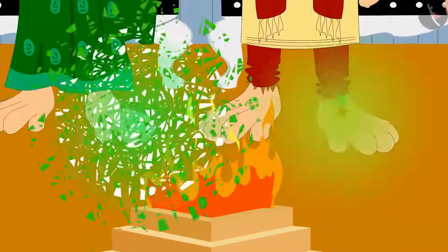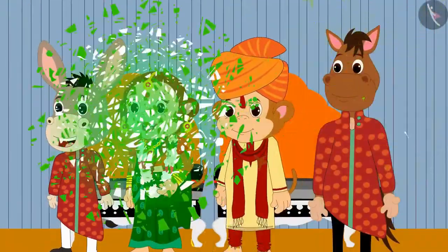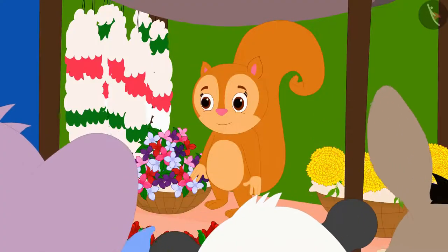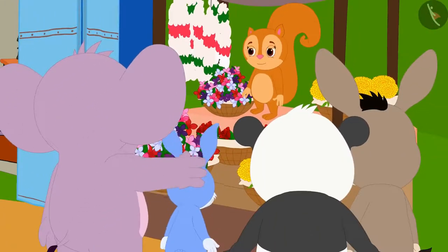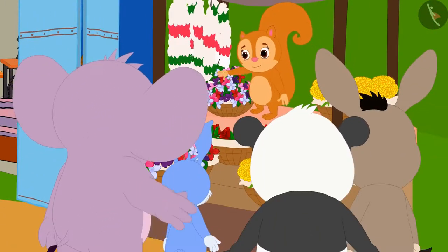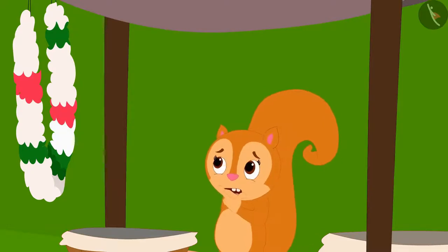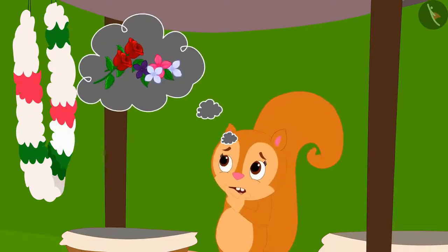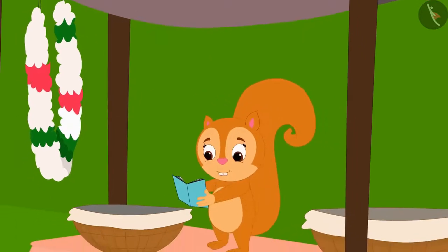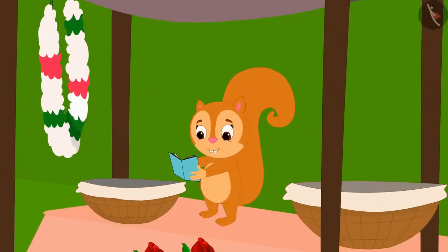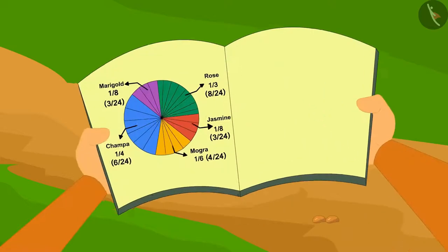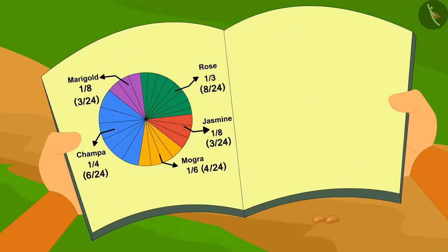With the wedding season in Champapur, Chanda is getting a lot of orders to decorate the wedding pavilion with flowers. Chanda is wondering which of her flowers people like the most. To find out, Chanda created a pie chart by looking at the record of flowers used in previous orders.